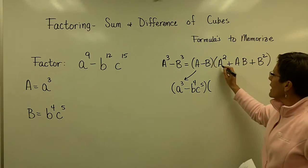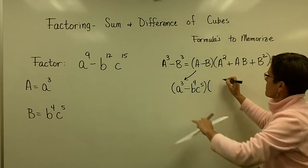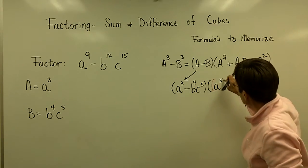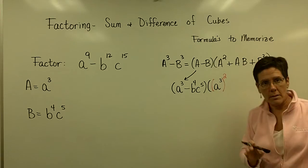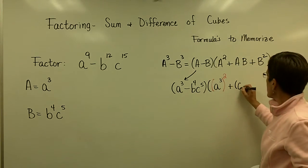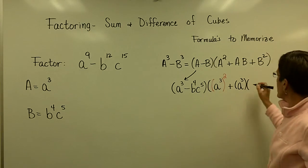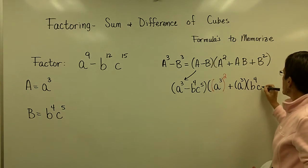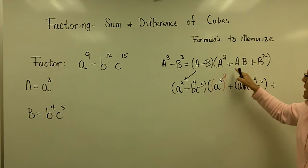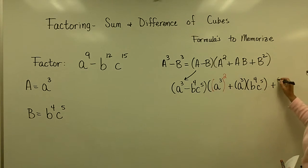Now, be careful. I've got to take my capital A, which is just little A cubed, and square that. Then I've got to take my A value, which is A cubed, and multiply that by my B value, which is B to the fourth, C to the fifth. And finally, this is always a plus sign - this one matches opposite and positive. And my B value is B to the fourth, C to the fifth, and that has to be squared.